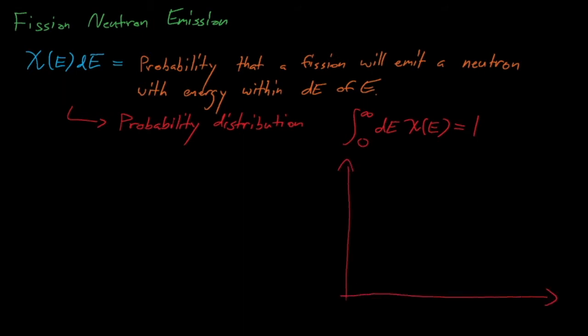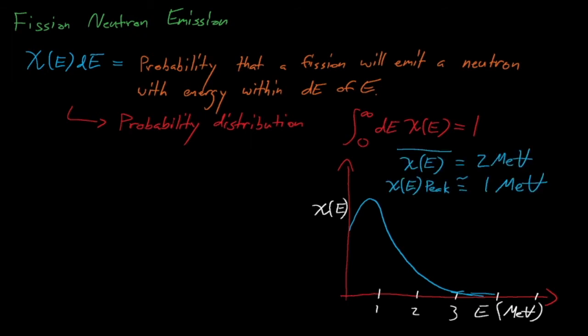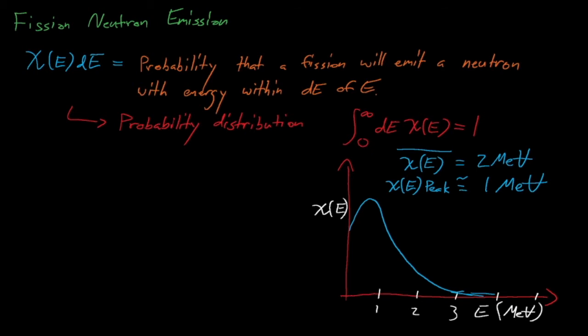The chi-spectrum depends on the target nucleus and on the energy of the neutron that induced fission. In general, higher energy neutrons tend to cause fission reactions that release higher energy daughter neutrons. The chi-fission spectrum follows this shape here, where the mean energy of neutron emission is about 2 MeV and the mode of the distribution occurs around 1 MeV. The chi-spectrum is effectively equal to zero at energies below about 100 KeV, which means essentially all fission neutrons are born at fast energies.